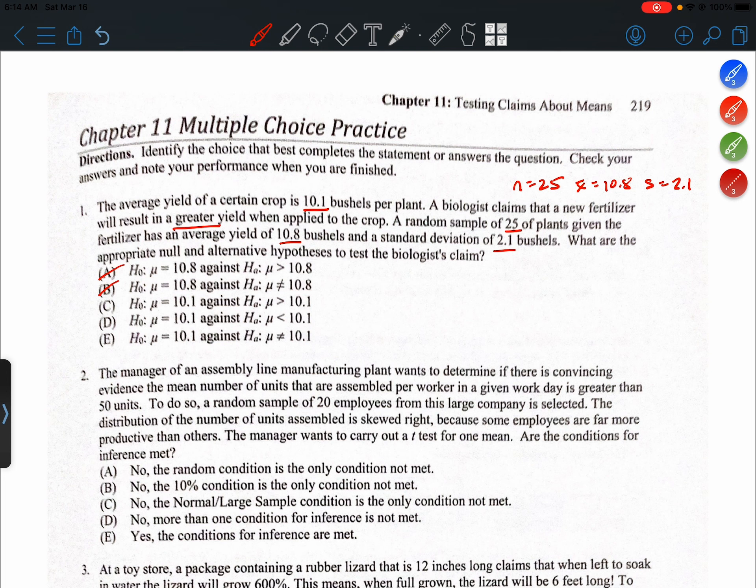Alright, and if we look at the remaining choices, remember I underlined this word - the biologist thinks or suspects that the fertilizer will give a greater yield. So that would be option C, which has an alternative hypothesis that mu is greater than 10.1.